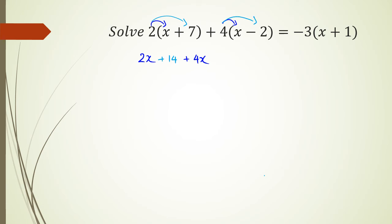And then 4 times negative 2 is negative 8. And all this is equal to negative 3 times x which is negative 3x and negative 3 times positive 1 which is negative 3.